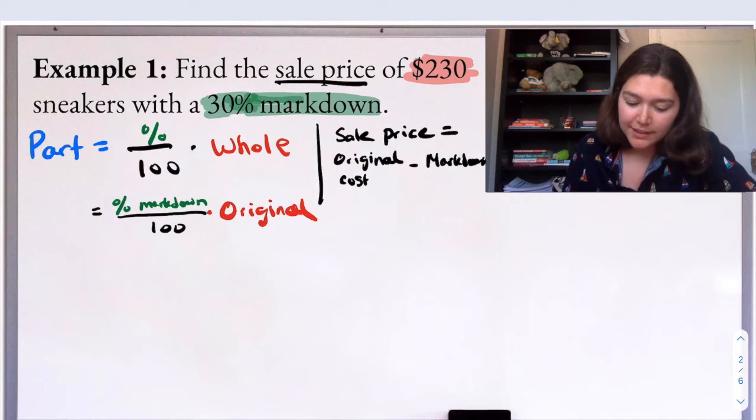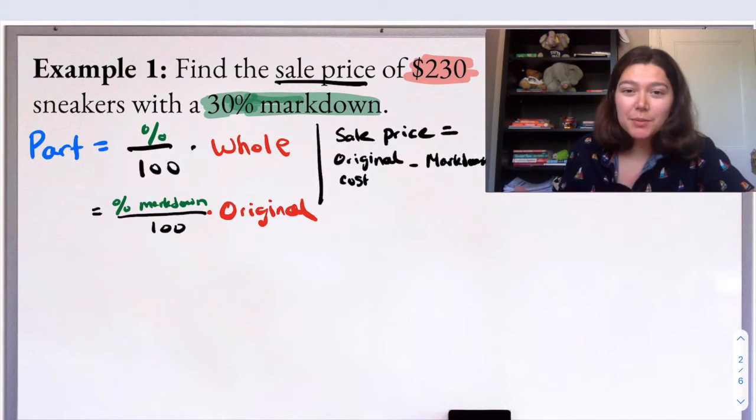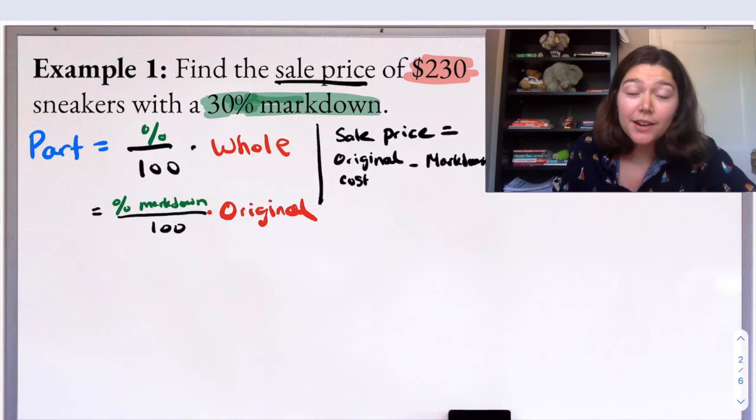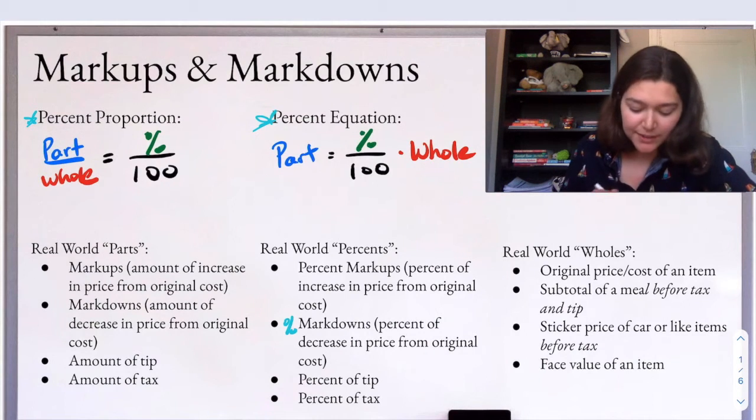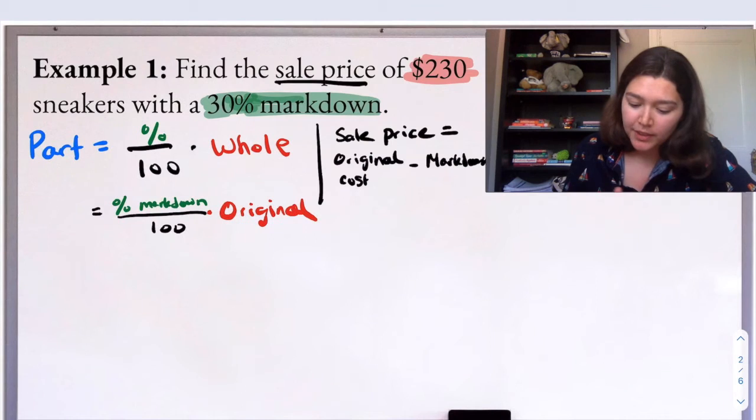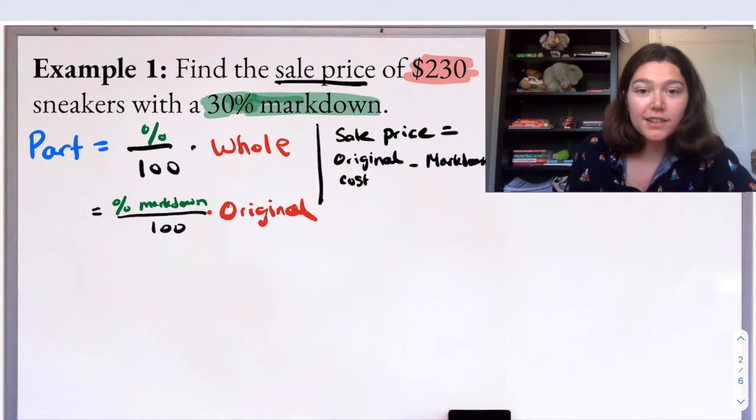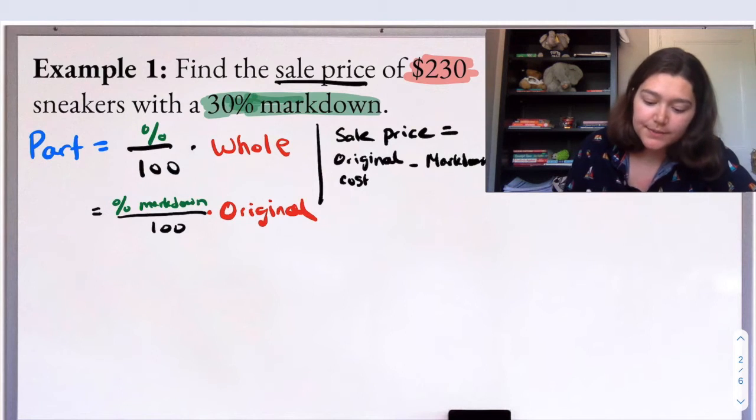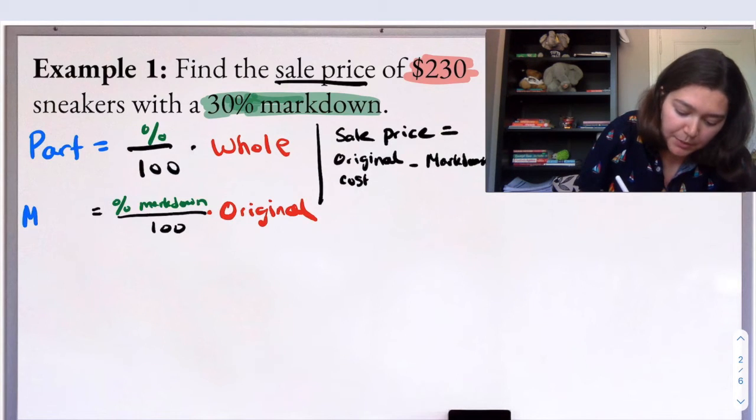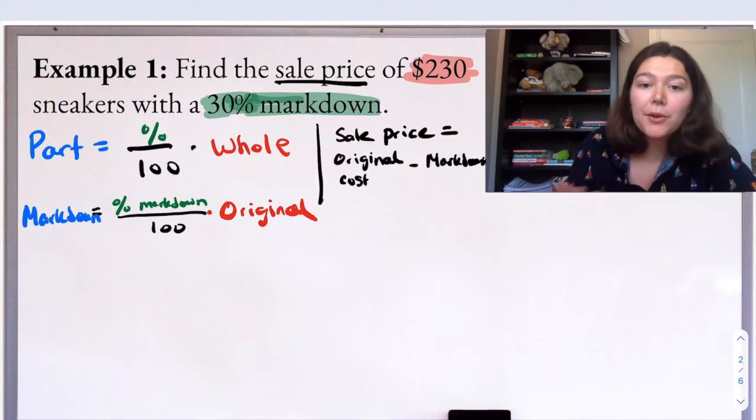Then I of course have my percent, which is pretty easy to see always, a 30% markdown. So I will eventually put in 30 there. But the percent part in this case is really going to be that percent markdown. And then the last thing I have is the part. So here it's a markdown problem because I have a 30% markdown. I can flip back over and I see real world parts would be markdowns, the amount of decrease. That's going to be important here because to find the sale price, I need the original cost and the amount of the markdown. That's going to be my part here, the markdown, which again is the amount of decrease.